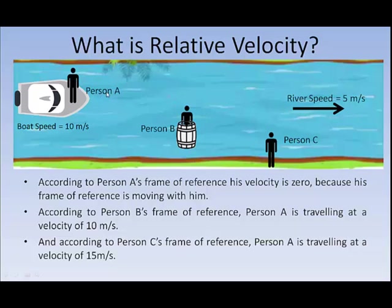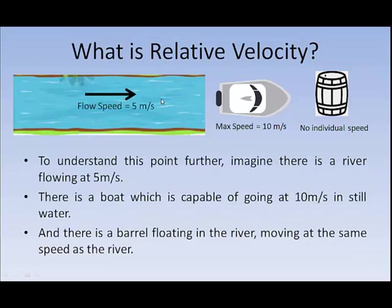And if I ask person A himself — imagine you are sitting on the boat and someone asks you what is the velocity of person A — with respect to you, person A is also on the boat. So with respect to you, the velocity of person A is 0. Why? Because your frame of reference is also traveling at a speed of 15 meters per second. So this is what relative velocity is: we measure the velocity of an object with respect to another object.